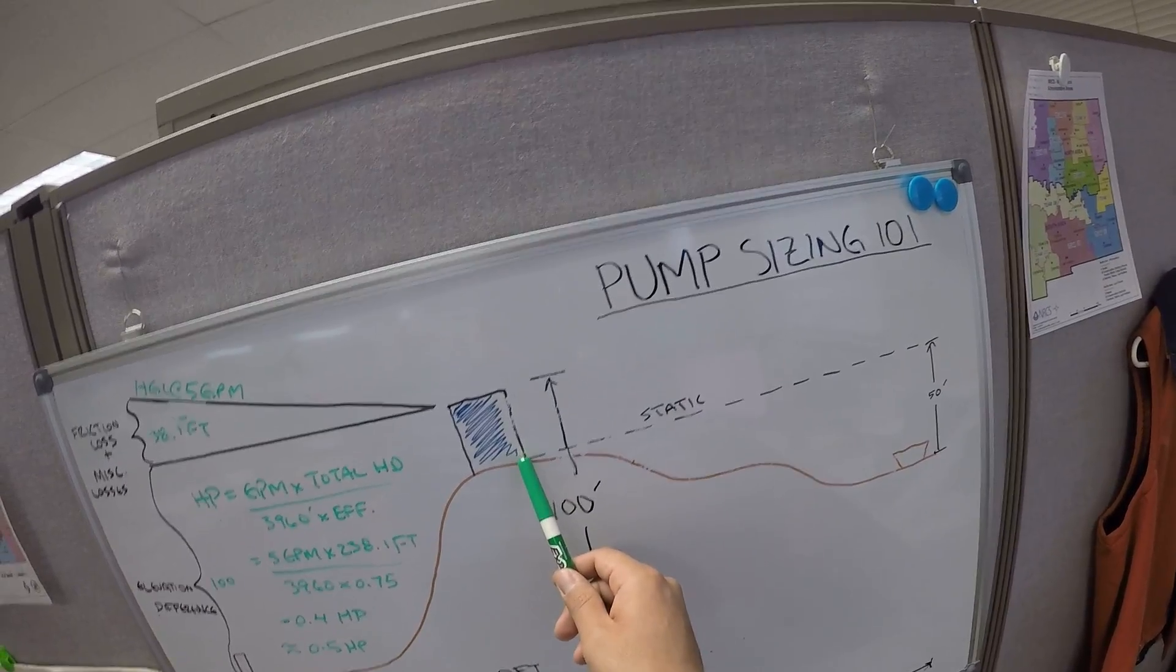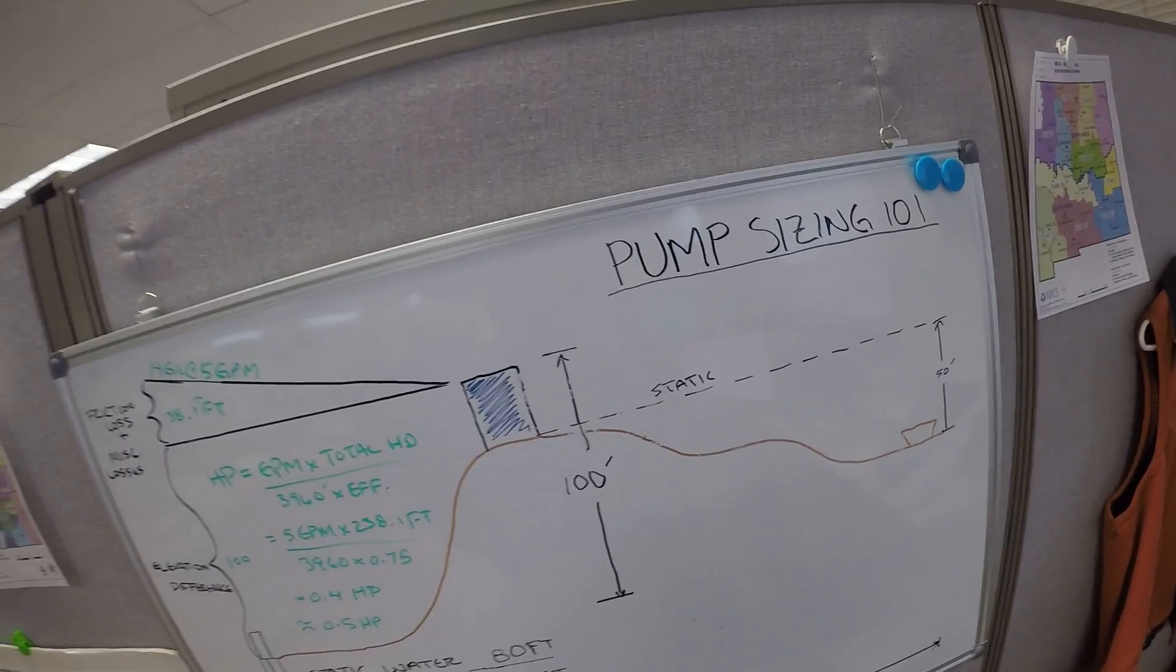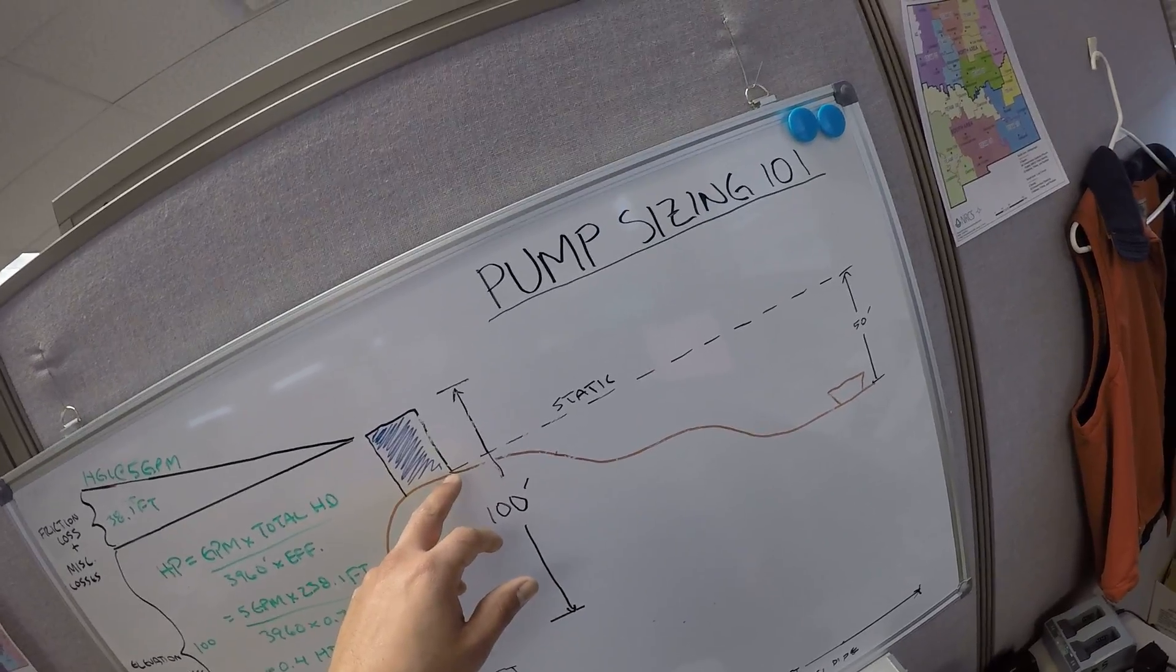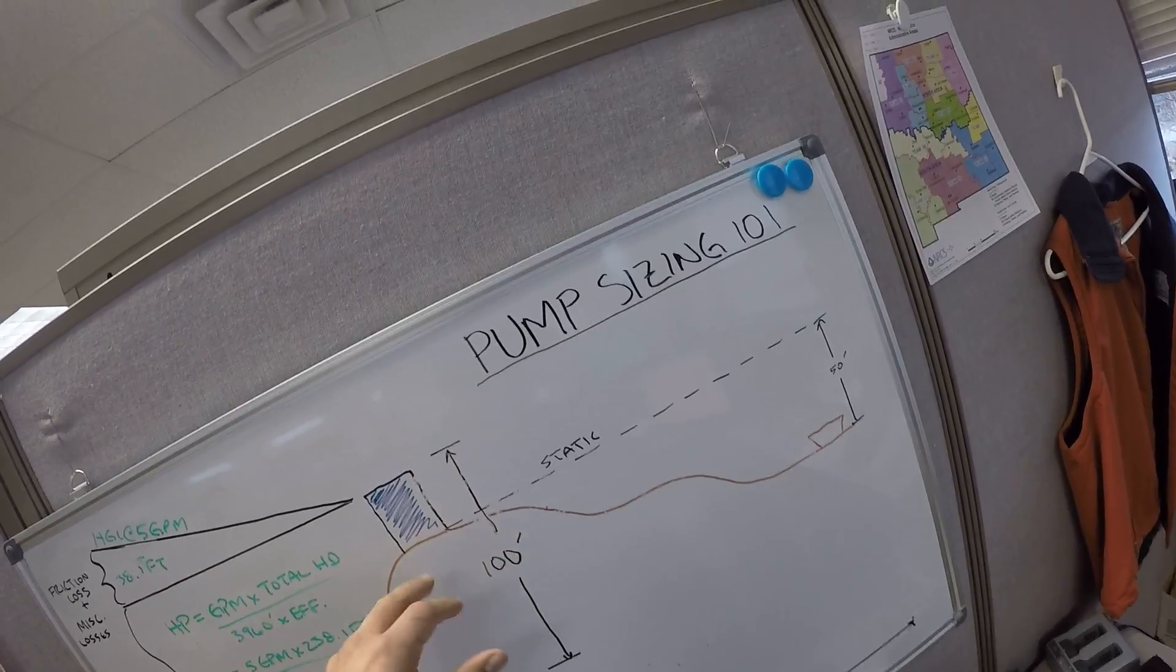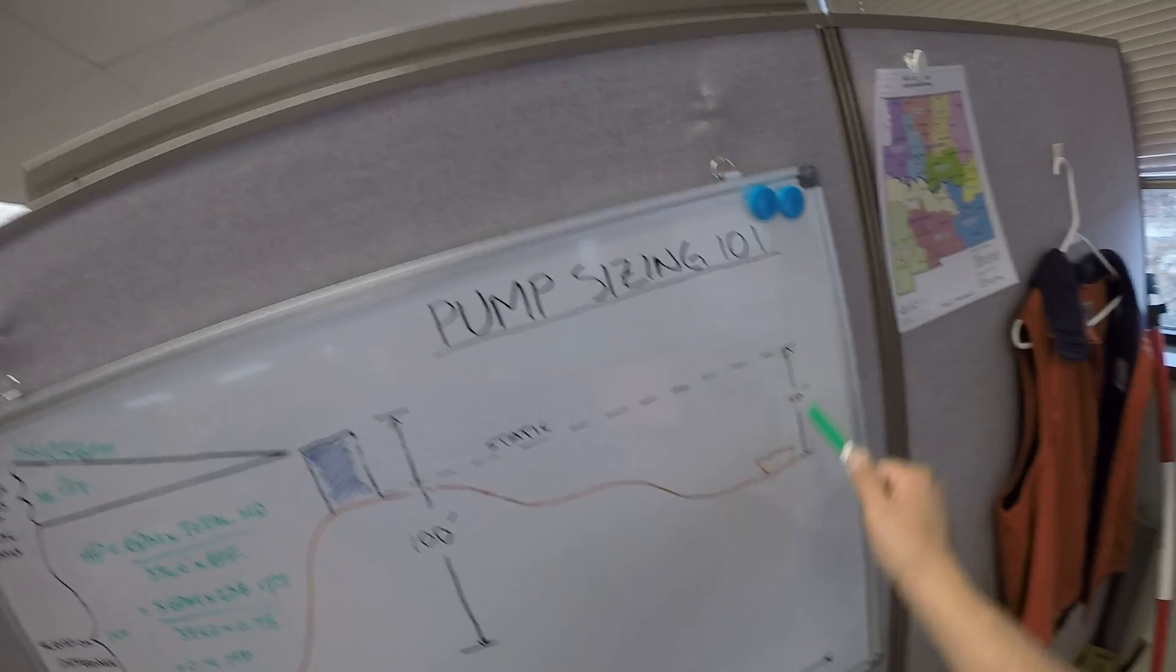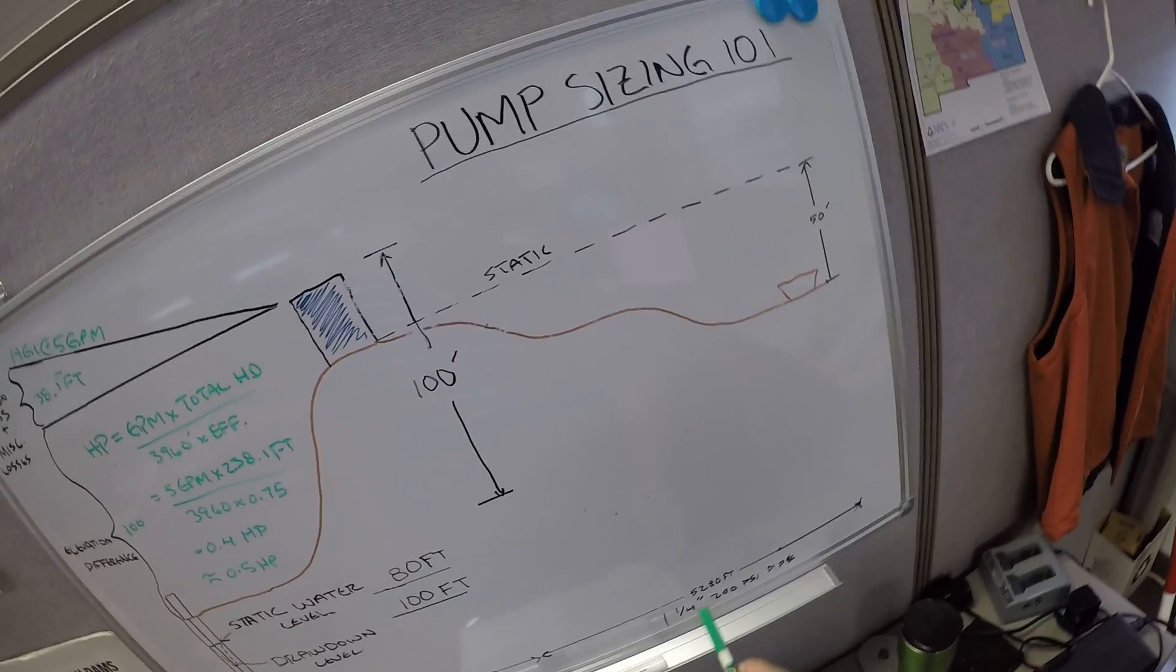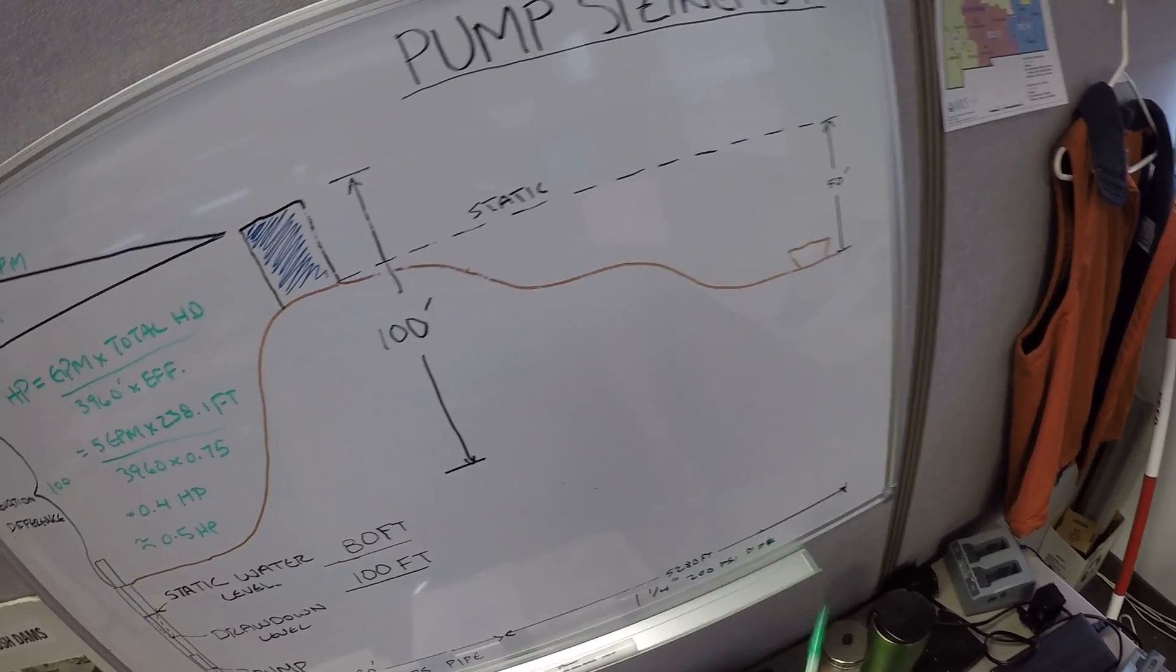There's a 50 foot difference from the tank to the trough. Static is always going to be from the bottom of the tank, and the reason why that's the case is because the worst case scenario in a gravity system is the trough's empty. So we got 50 foot depth, and we got 5,280 feet of pipe, inch and a quarter, 200 psi.